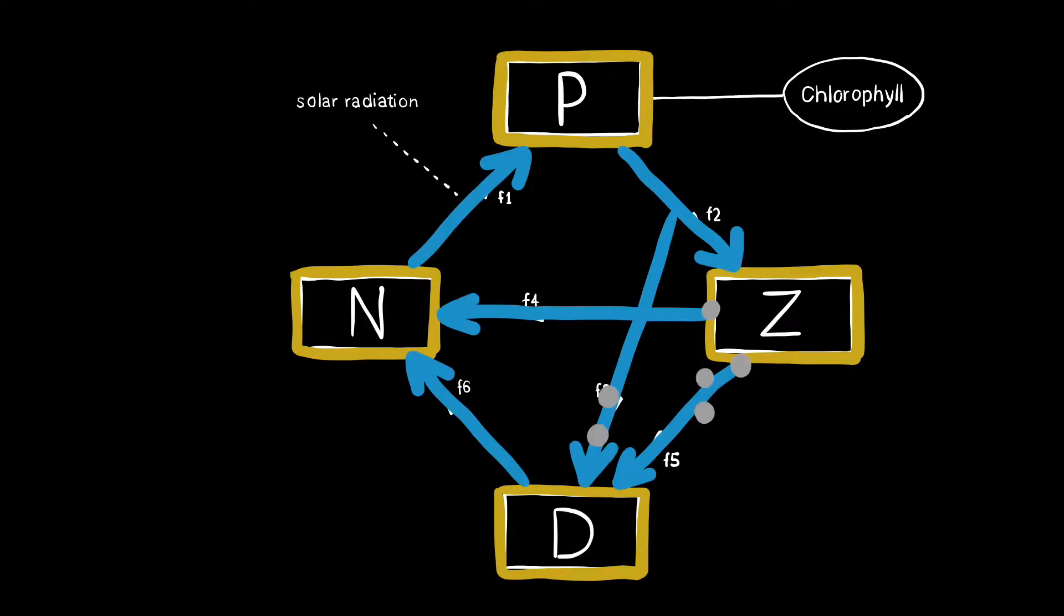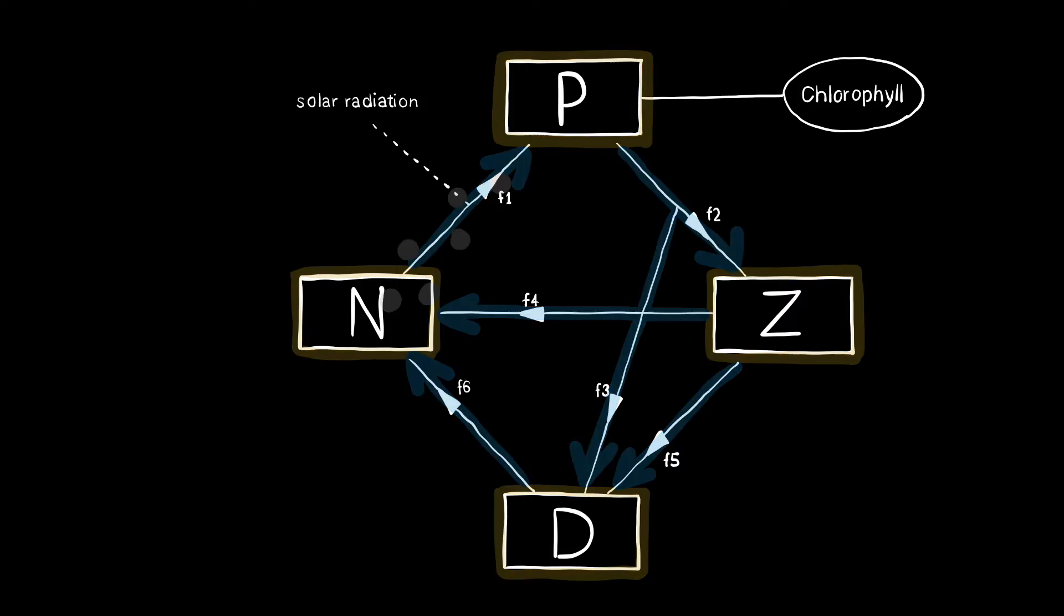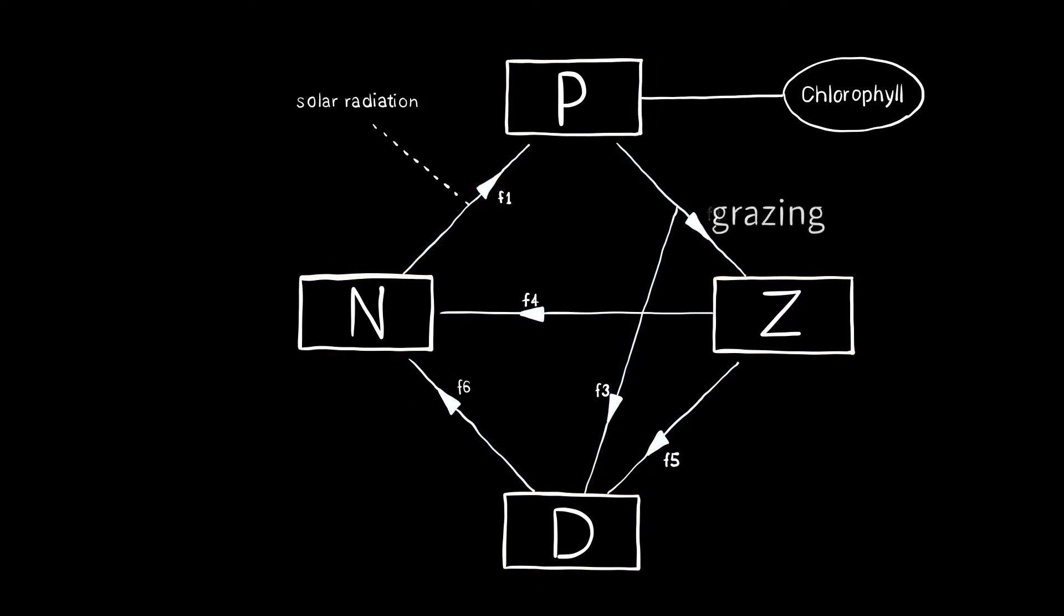The boxes are the state variables, and with the arrows we show how matter flows through the system. For example, grazing of zooplankton on phytoplankton is represented by the F2 arrow. Part of this grazing is converted to feces and ends up in the detritus pool.